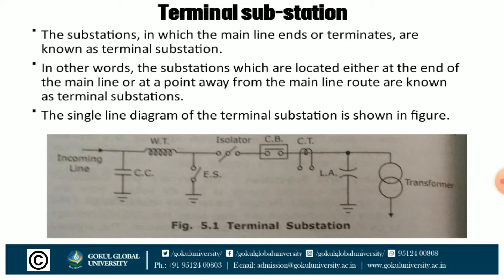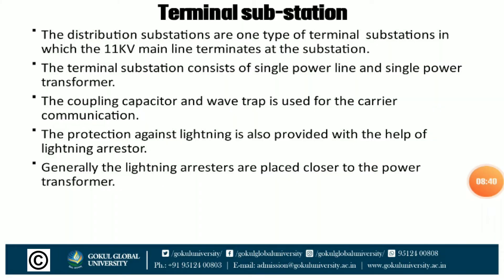The substation in which the main line ends or terminates is known as the terminal substation. In other words, substations located either at the end of the main line or at a point away from the main line route are known as terminal substations. The distribution substation is one type of terminal substation in which the 11 kV main line terminates at the substation. It consists of a single power line and single power transformer. Coupling capacitor and wave trap are used for carrier communications, and protection against lightning is provided with the help of lightning arrestors, generally applied closer to the power transformers.